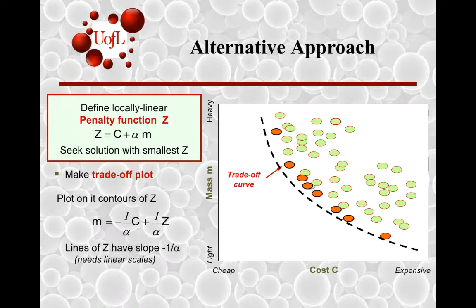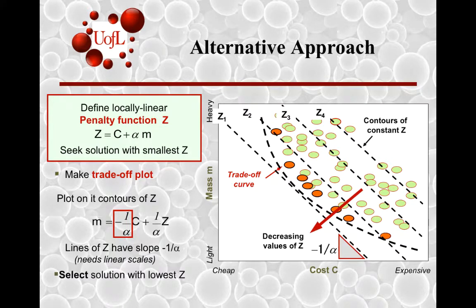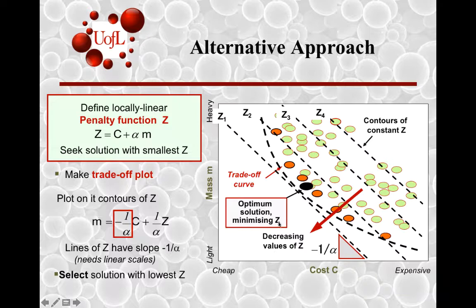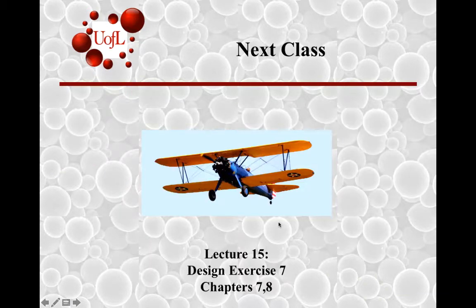And so we make a trade-off plot, and then we plot contours that are based on this slope of minus one by alpha. The job for the next class is to be able to work with problems where we optimize the solution for minimizing z, and that will be the focus for the next class.